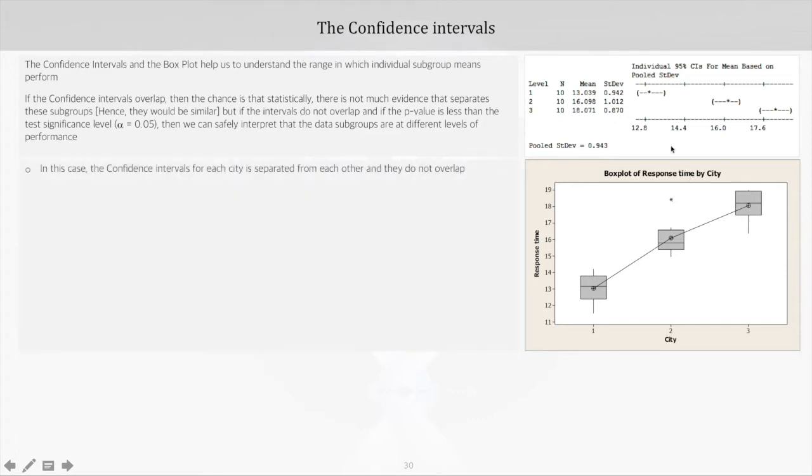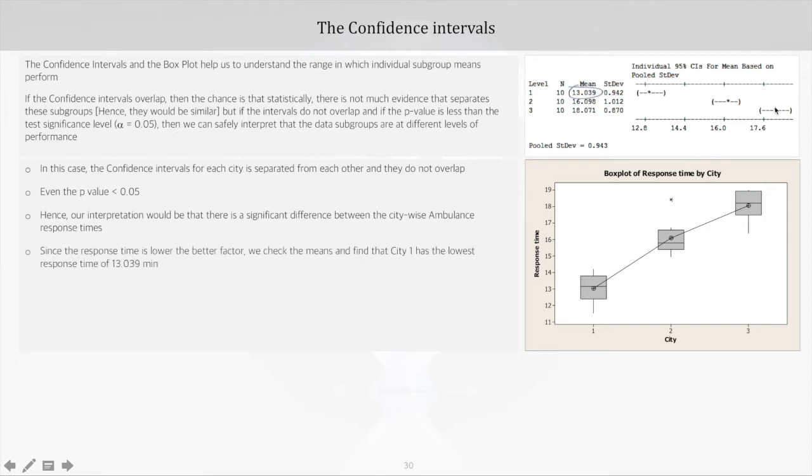In this example, the confidence intervals for each city are clearly separated from each other—they don't overlap. We also saw earlier in the ANOVA table that the p-value is less than five percent. So in this case, we can say that there is a significant difference between the city-wise ambulance response times. Since the response time is a lower-the-better kind of factor, now we will check the means.